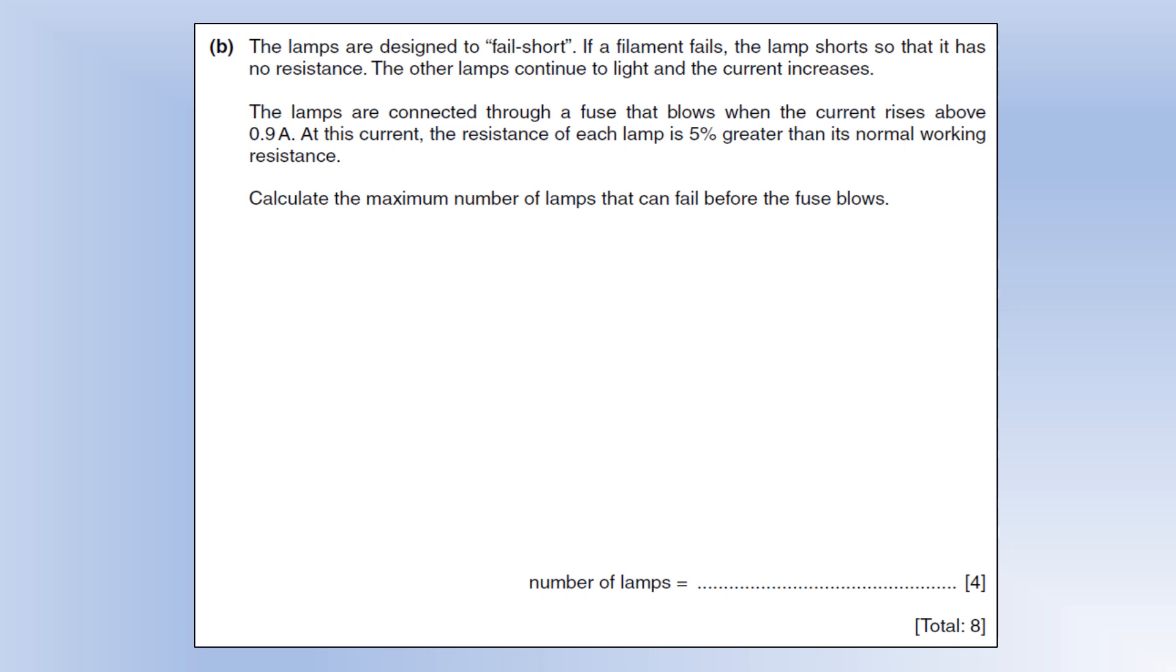If the lamps are connected through a fuse that blows when the current rises above 0.9 amps, at this current the resistance of each lamp is 5% greater than its normal working resistance. Calculate the maximum number of lamps that can fail before the fuse blows.